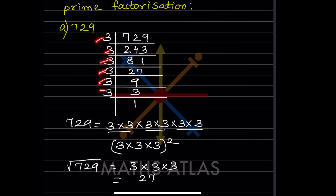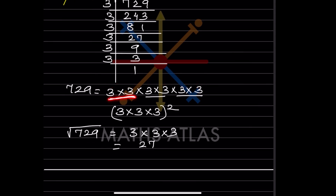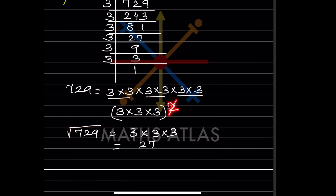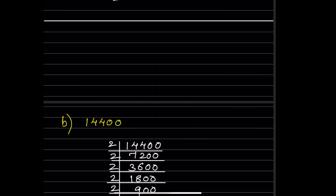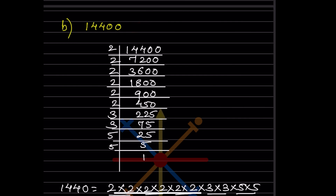Once you have all the factors, there are 6 threes: 1, 2, 3, 4, 5, 6. Since it is a square root, you make groups of 2. If it were a cube root you would make groups of 3. You write each factor only once from each pair, so you get 3 × 3 × 3, and that equals 27. So the square root of 729 is 27.